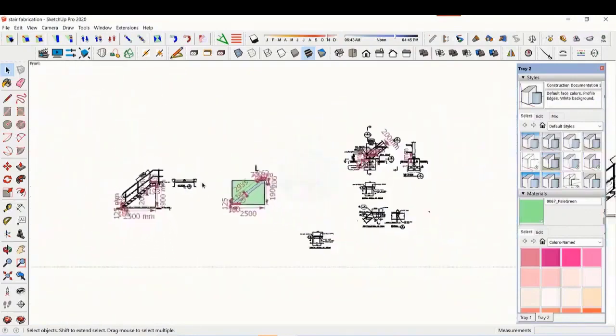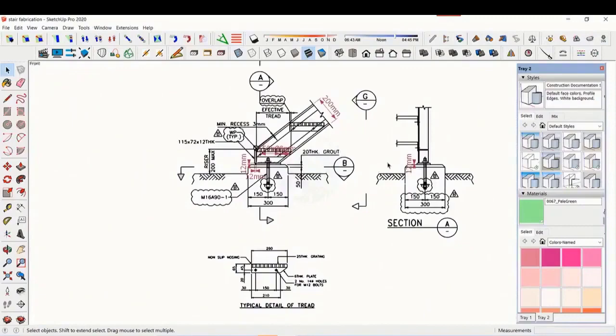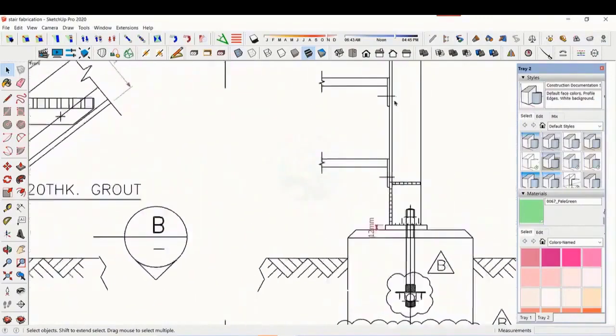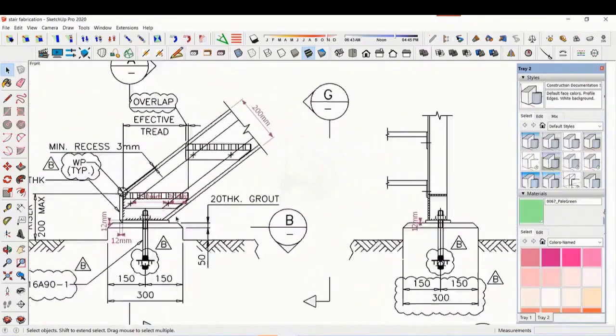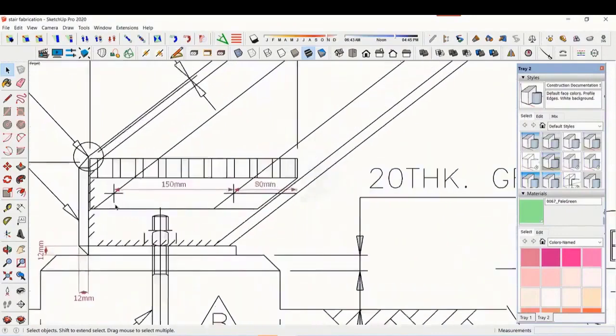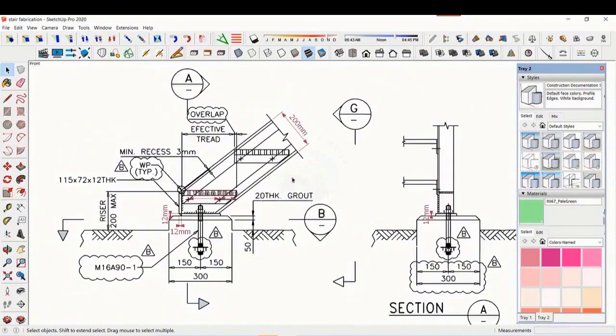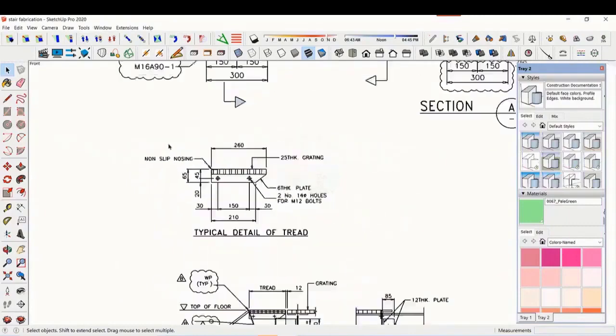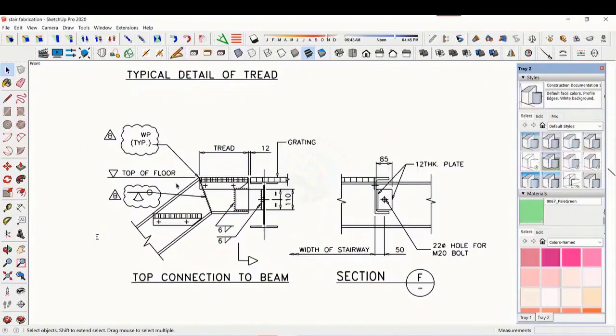Let us see some other details. This is the base plate and base end plate. See the details of the tread. The distance and pitch of the holes are very important. See the details of the top end. Study how the stair and the platform beam are connected.